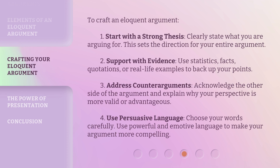To craft an eloquent argument: one, start with a strong thesis — clearly state what you are arguing for, as this sets the direction for your entire argument. Two, support with evidence — use statistics, facts, quotations, or real-life examples to back up your points. Three, address counter-arguments — acknowledge the other side of the argument and explain why your perspective is more valid or advantageous. Four, use persuasive language — choose your words carefully and use powerful and emotive language to make your argument more compelling.